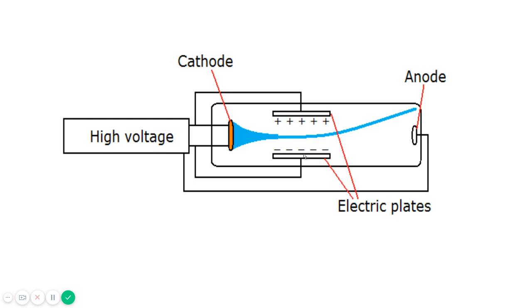As you can see in the diagram, this was a positive plate, this was a negative plate, and these were the rays deflected towards the anode, that is the positively charged terminal. So you can say opposites attract—positive attracts negative. These rays were attracted toward the positive terminal, showing their negative nature.